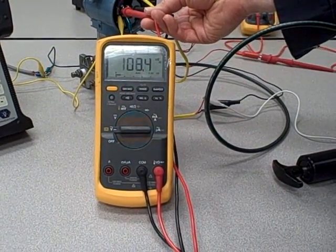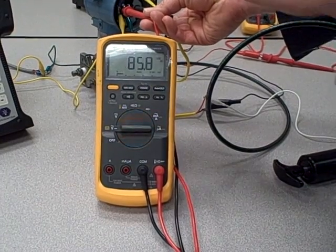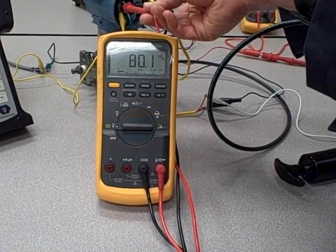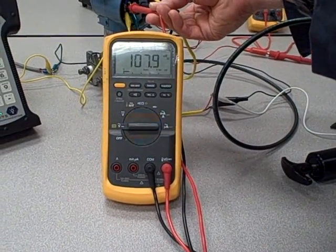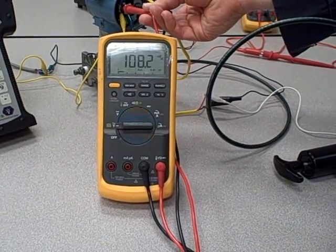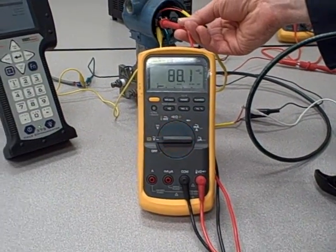That signal you see right there, the 100 millivolts or so AC voltage, is what is constituting the digital signals between the field communicator and the transmitter, talking back and forth. Those pulses of voltage, binary ones and zeros, communicating digital information.